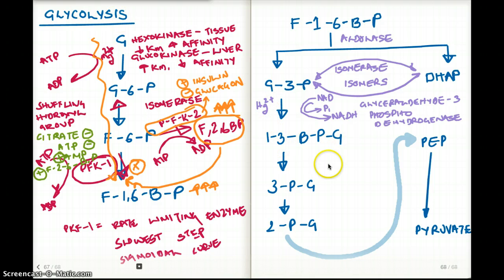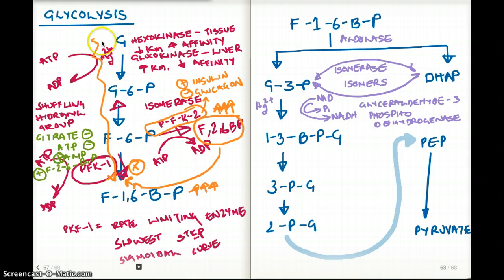Now from 1,3-bisphosphoglycerate, we are making 3-phosphoglycerate using the enzyme phosphoglycerate kinase. This process is also making 1-ATP from ADP, but do remember that there is 2 of these going on because these are one of the 3-carbon atoms. There is another one, so really we're making 2-ATPs not 1-ATP.